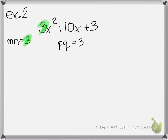This is example number 2. Let's go ahead and try to factor 3x squared plus 10x plus 3. When I factor this, I need to find out what my mn is. I need to find out what my pq is. mn is 3 and pq is 3. mn is that first one and pq is this last one. They're both positive.